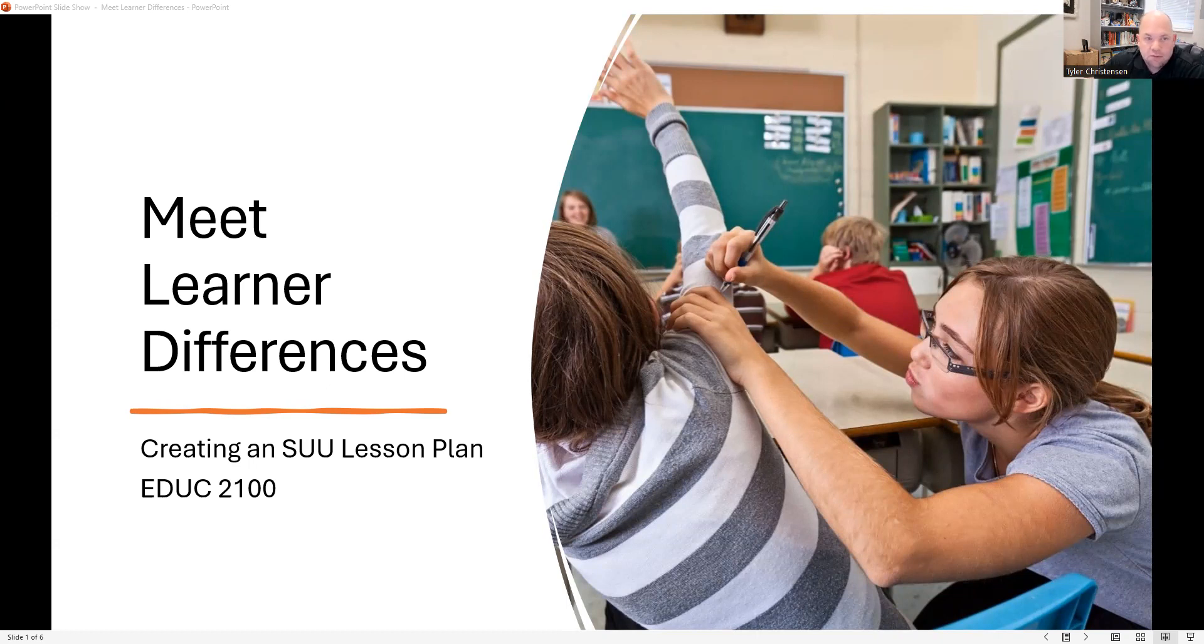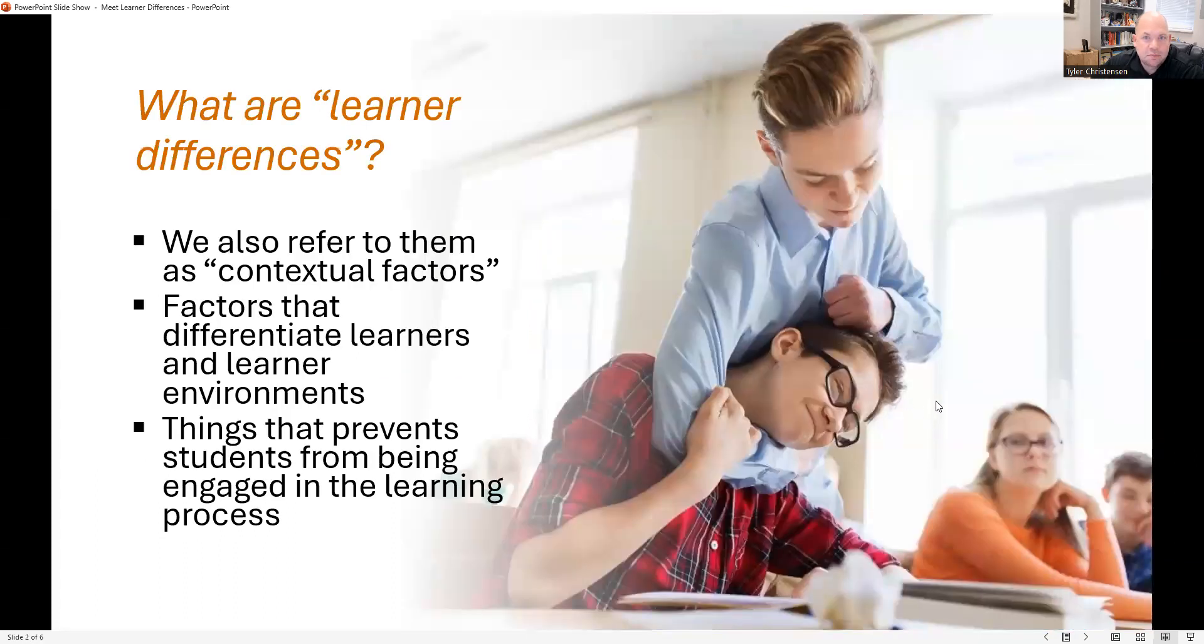First we have to consider what learner differences mean. We've talked about this being contextual factors, and as you research different school districts or individual schools or even the students within those schools, you find that there are certain things that make it more difficult for certain students to learn. It might be something like English as a second language. If they have that challenge, it's going to be harder to learn, and there will be certain strategies that can help accommodate those students.